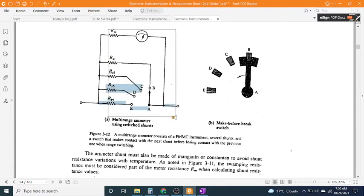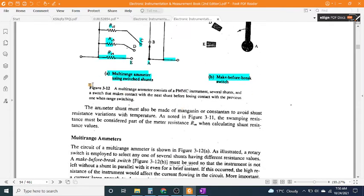Multi-range ammeter using switched shunts: A make-before-break switch. Figure 3-12 shows a multi-range ammeter consists of a PMMC instrument, several shunts, and a switch that makes contact with the next shunt before losing contact with the previous one when range switching.